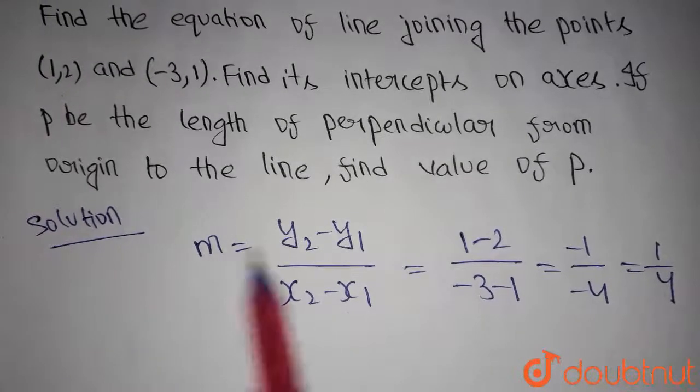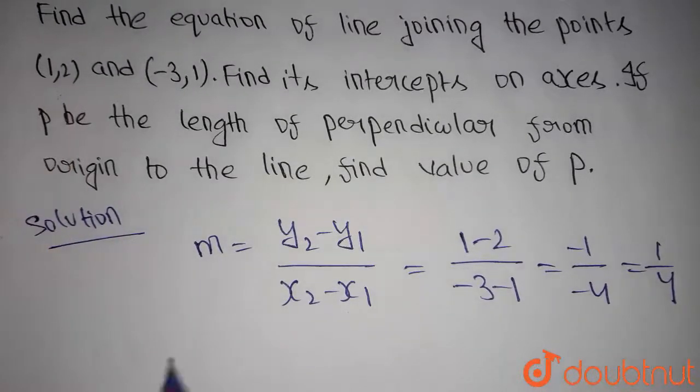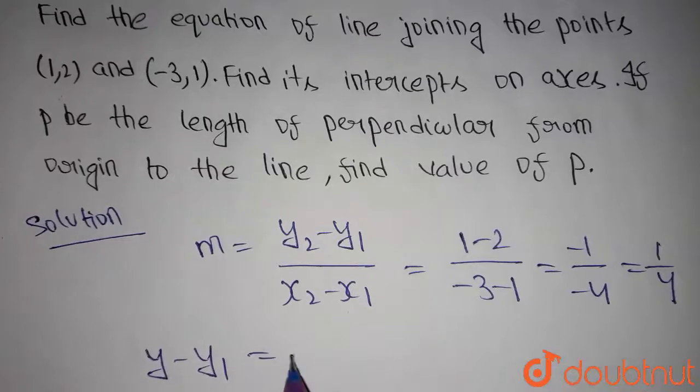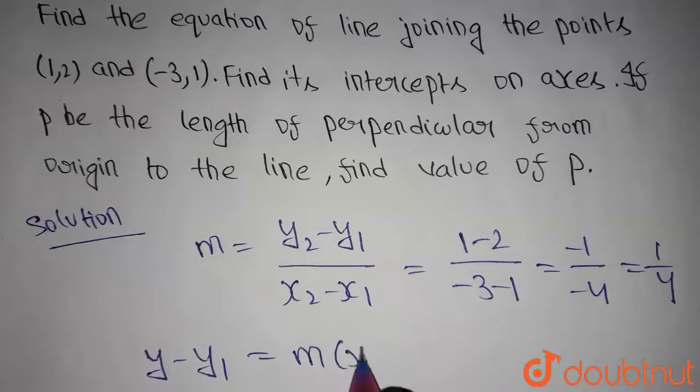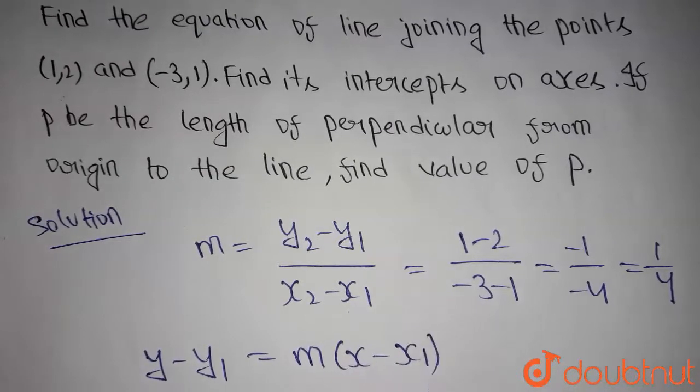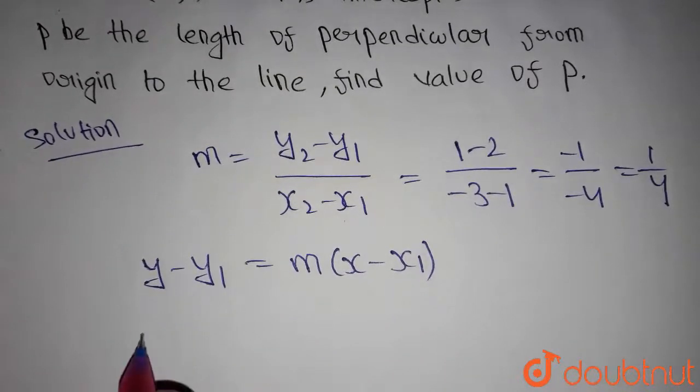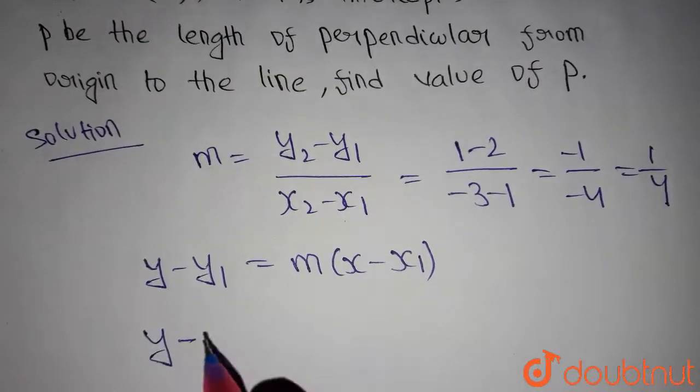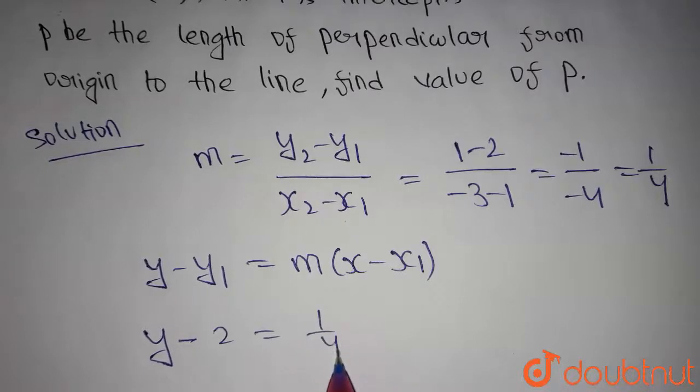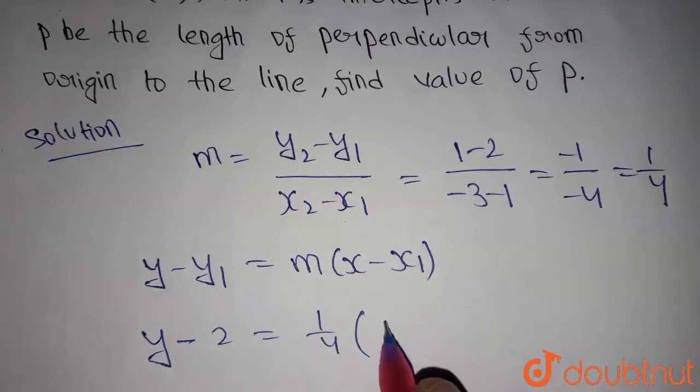So, we know the slope of a line and a point through which it passes. Then, we get the line equation by using the formula y minus y1 is equals to m into x minus x1. Now, let's substitute the points. We get y minus 2 is equals to 1 by 4 into x minus 1.